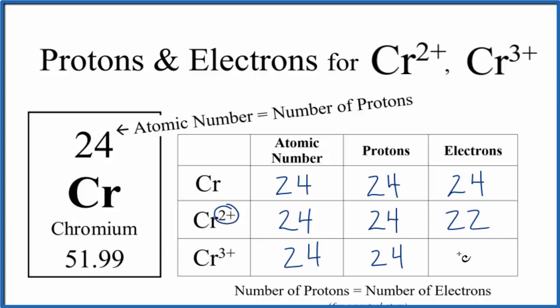Cr³⁺, we just have 21. So the big difference between the neutral element here and the ions is the number of electrons.